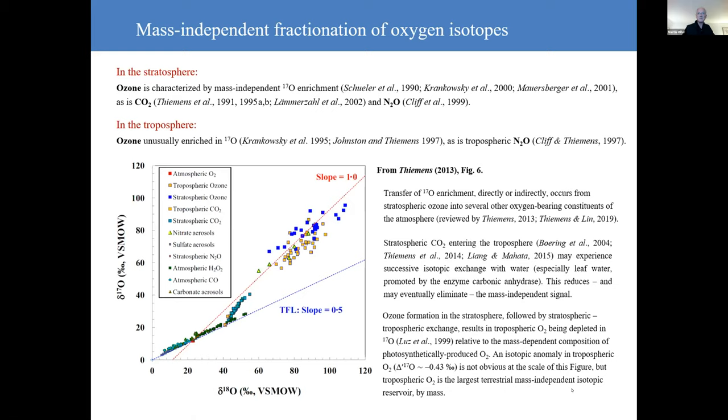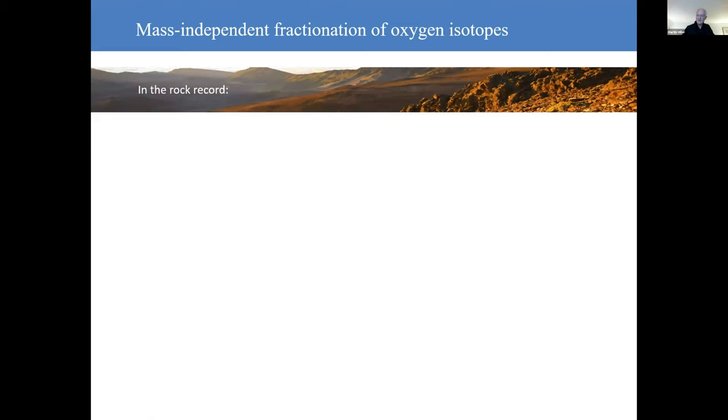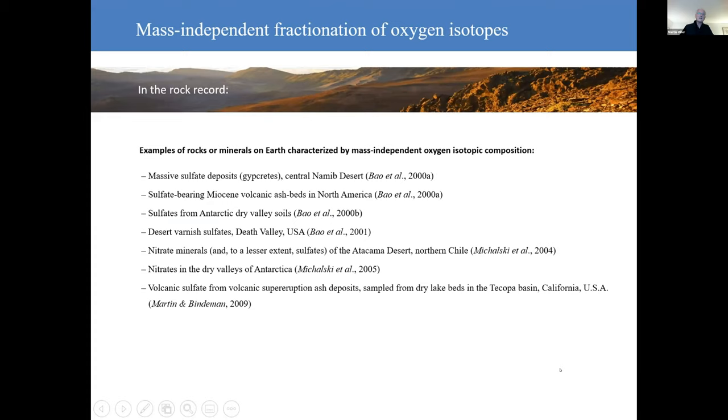What about in the rock record? Well, the first discovery was made by Huiming Bao and his colleagues. And basically there are examples known now, several others have been found, of rocks or minerals characterised by mass independent oxygen isotopic compositions. They tend to be sulphates or nitrates from desert environments, either hot deserts or cold deserts, such as the Antarctic. And modelling indicates that these unusual isotopic compositions can be traced to photochemical reactions in the stratosphere or the troposphere.